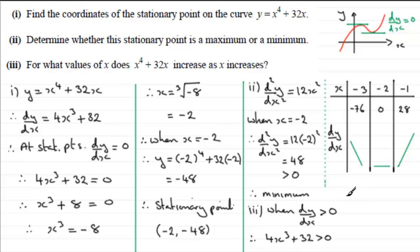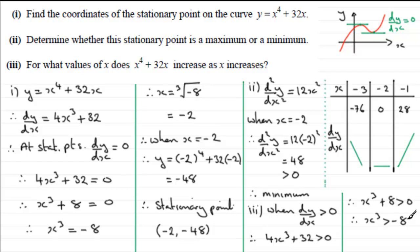Dividing through by 4 (a positive value, so the inequality doesn't reverse) gives x cubed plus 8 greater than zero, therefore x cubed greater than minus 8. Taking the cube root of both sides gives x greater than the cube root of minus 8, which is minus 2. So the curve is increasing when x is greater than minus 2.